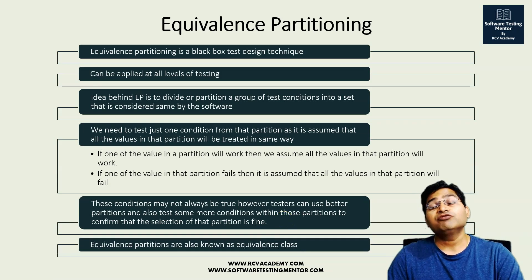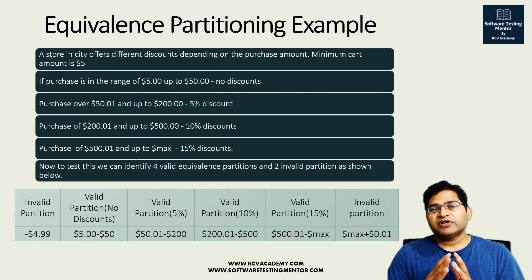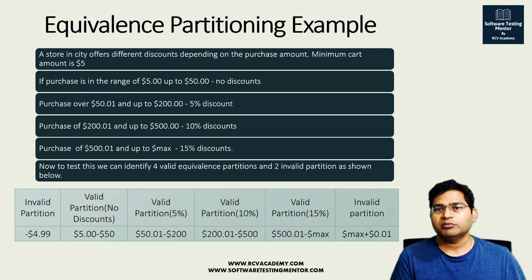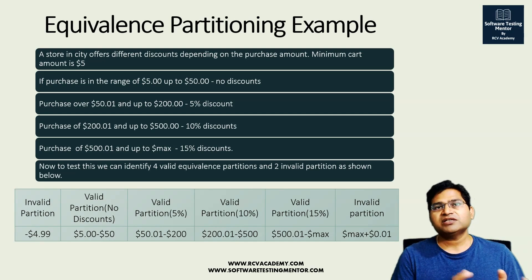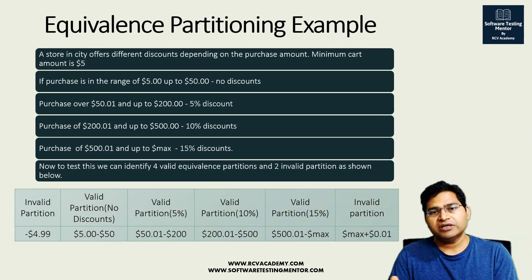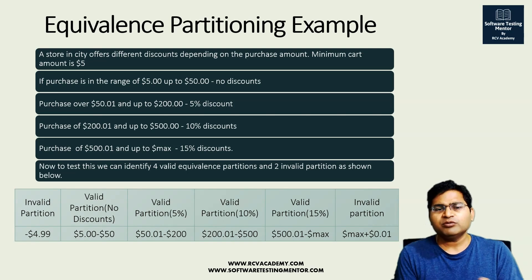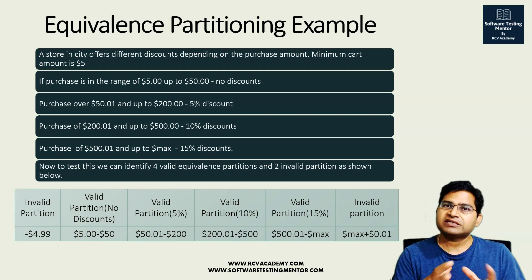Equivalence partitions are also known as equivalence classes — the terms are interchangeable. A common example is discount tiers in an e-commerce store. Say a store offers discounts based on purchase amount: $5–$50 gets no discount, above $50 up to $200 gets 5%, above $200 up to $500 gets 10%, and above $500 up to the maximum purchase limit gets 15% discount.